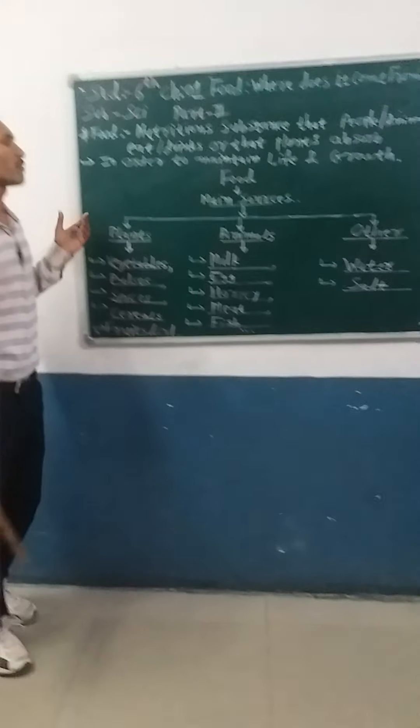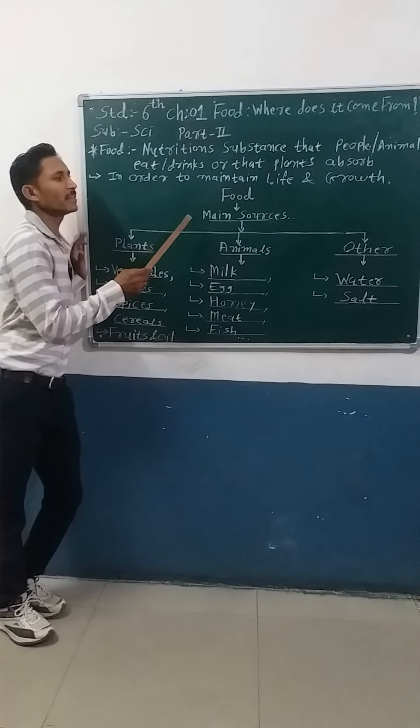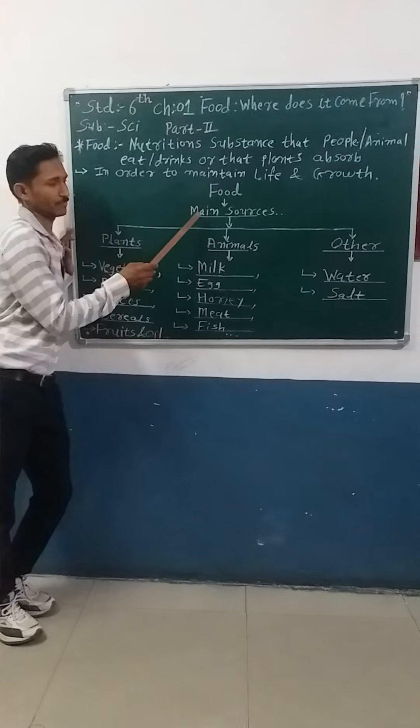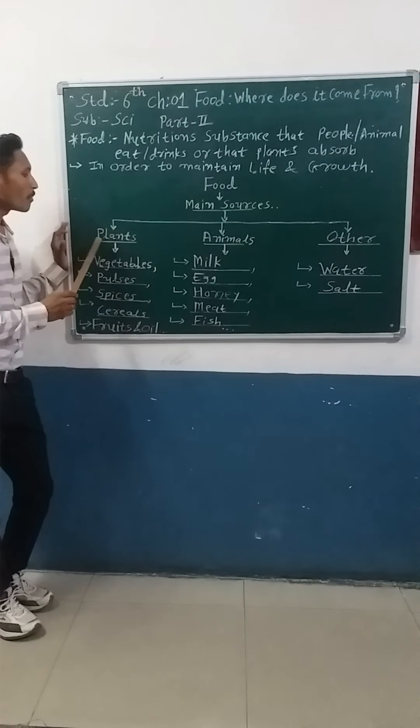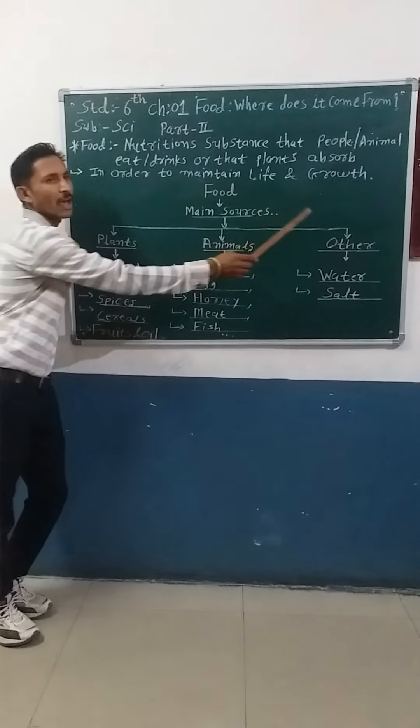Once more, there are mainly 3 sources of food: plants, animals, and others.